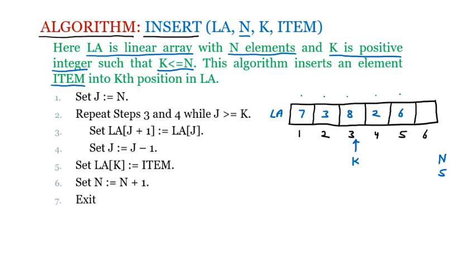The element stored in 'item' is five, and we are going to insert this element five at the kth position, which is the third position. To summarize: LA is the linear array, n is the number of elements currently present (five), k is the specific position (three), and item is the element to insert (five). These are all the inputs to the algorithm.